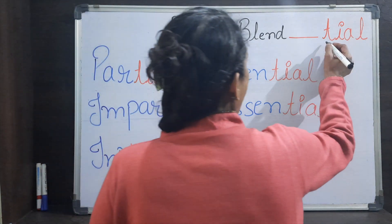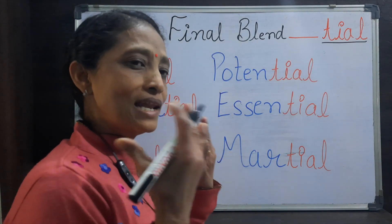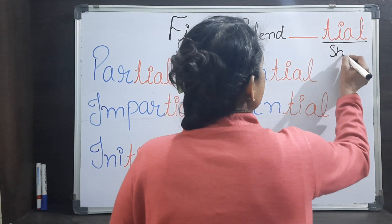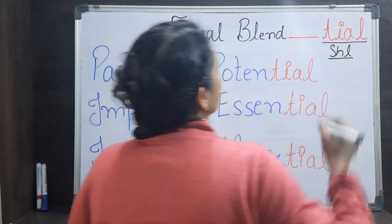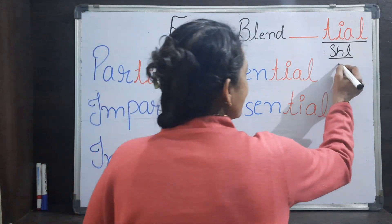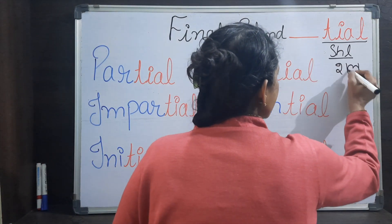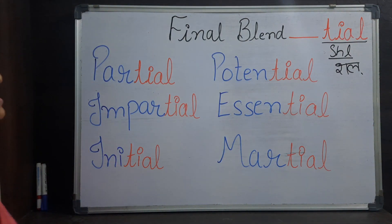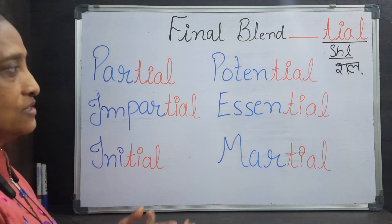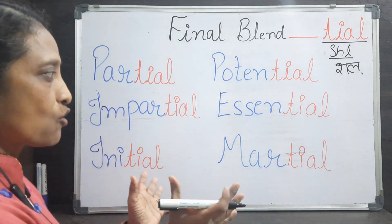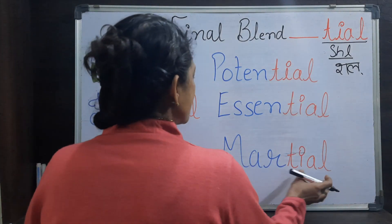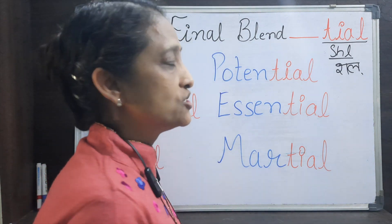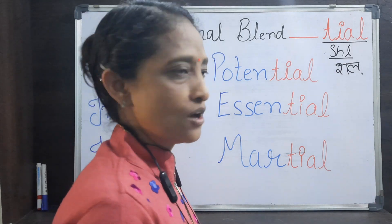This is a combination word. When a word's last combination is T-I-A-L, when the word's last letters are T-I-A-L, what sound will be there? The sound will be 'shl' — shl, shl, shl.